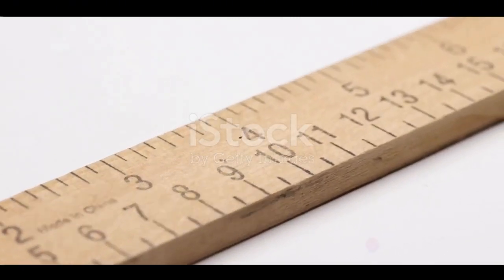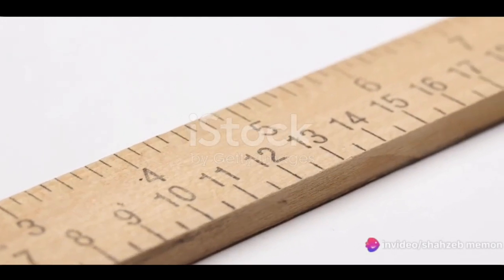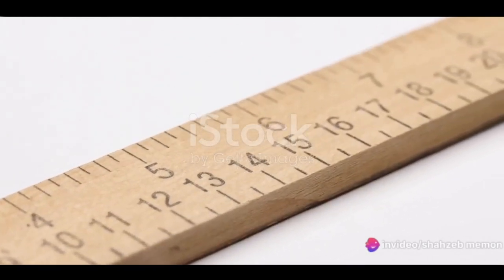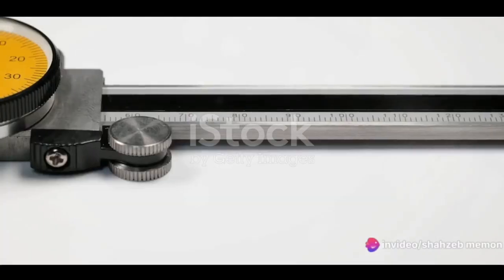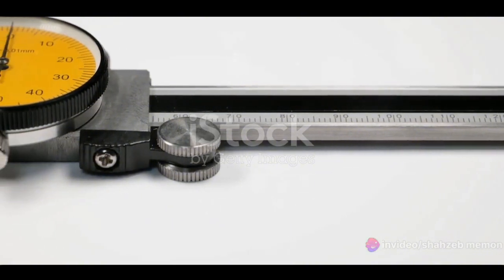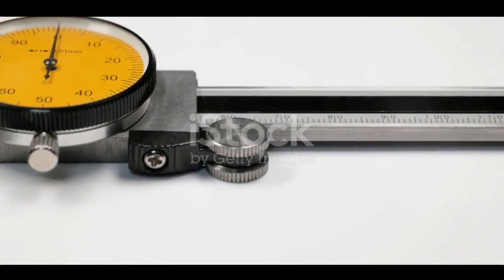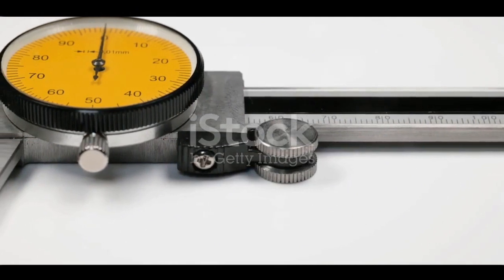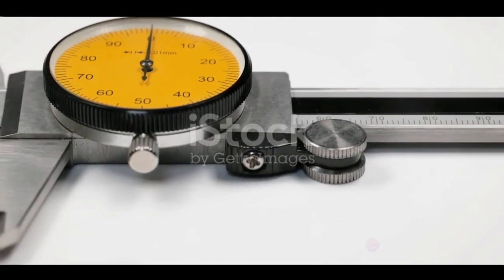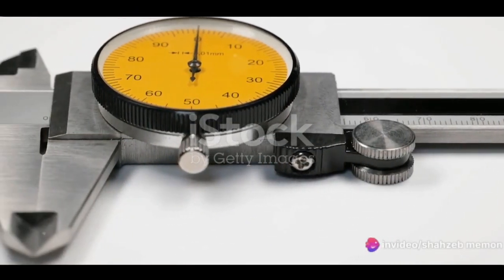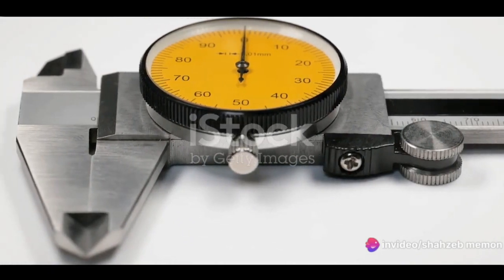To read the vernier scale, we start by aligning the zero point on the vernier scale with the nearest whole millimetre mark on the main scale. Next, we note the vernier scale division that lines up with any division on the main scale. This is where the magic happens. That vernier scale division is an extra bit of precision that the main scale can't provide.